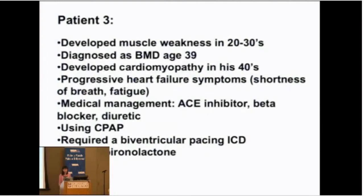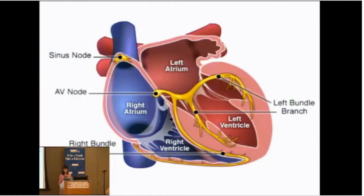Another patient developed muscle weakness in his 20s and 30s and was diagnosed with Becker at age 39. In his 40s he developed cardiomyopathy with heart failure symptoms of shortness of breath and fatigue. He was placed on an ACE inhibitor, beta blocker, and a water pill (diuretic), was using CPAP at night, and was using a biventricular defibrillator that could pace both ventricles. We added spironolactone, and this resulted in quite a bit of stability and a lot of improvement in symptoms.